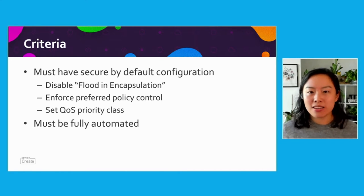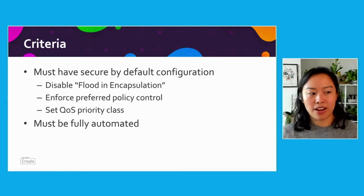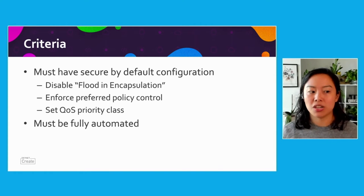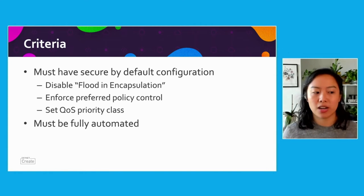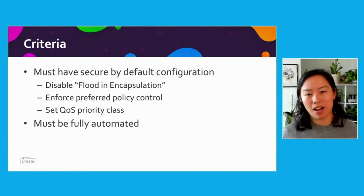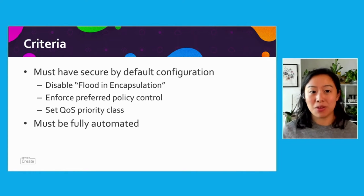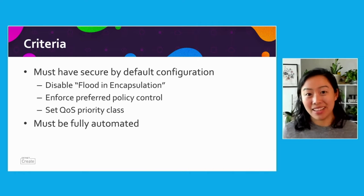The criteria we're going to try to fulfill today is that it must have a secure by default configuration. I picked a few good configurations we should probably consider, including disabling flood and encapsulation, enforcing preferred policy control, and setting quality of service priority class. And we must have this fully automated — we don't want someone injecting bad infrastructure as code into this kind of automation, because that could be insecure.